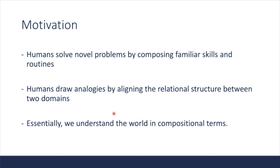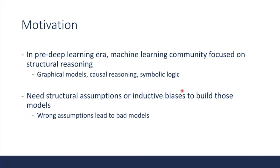Humans solve novel problems by composing familiar skills, routines, or concepts. We draw analogies by aligning the relational structure between two domains and do inference using the relational structure. Essentially, we understand the world in compositional terms. This is really efficient because once we learn a general rule of how to relate certain concepts, we can apply them in many different ways. Before deep learning became dominant, people focused on structural reasoning — for example, in the form of graphical models, causal reasoning, or symbolic logic.